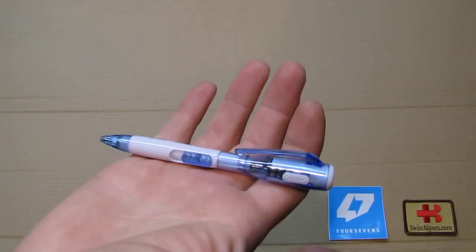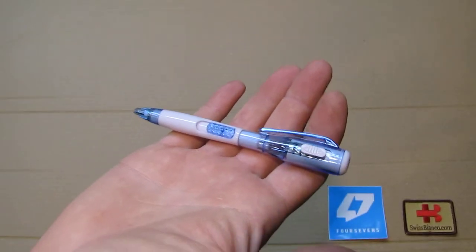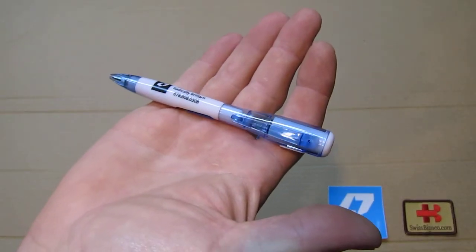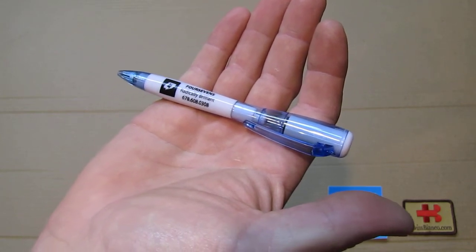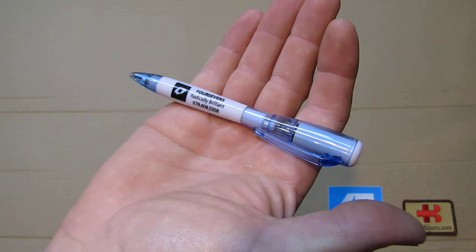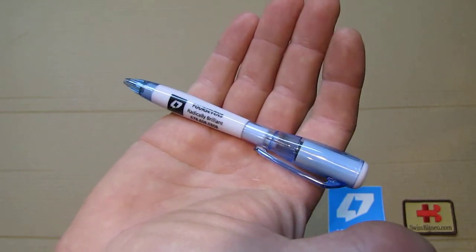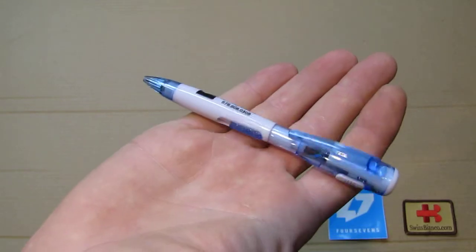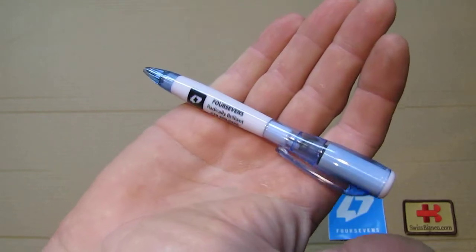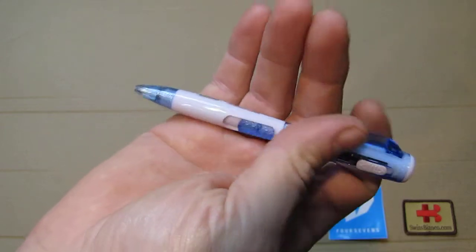As I like smaller flashlights and the five millimeter LED lights a lot, like the Photon light and others in that smaller size, a secondary way would be to have a pen like this combined with a flashlight. So I like this a lot as well.